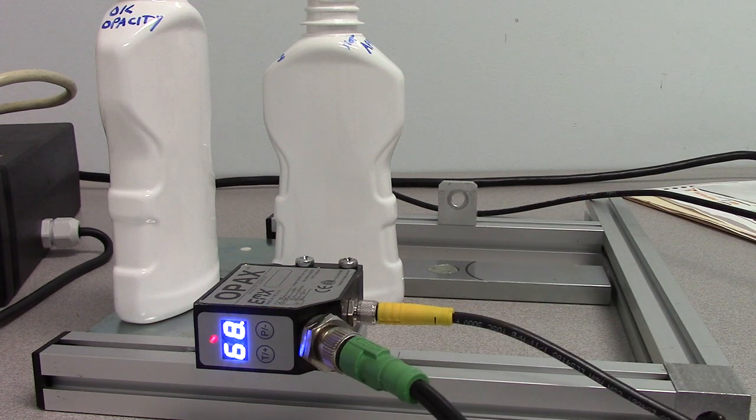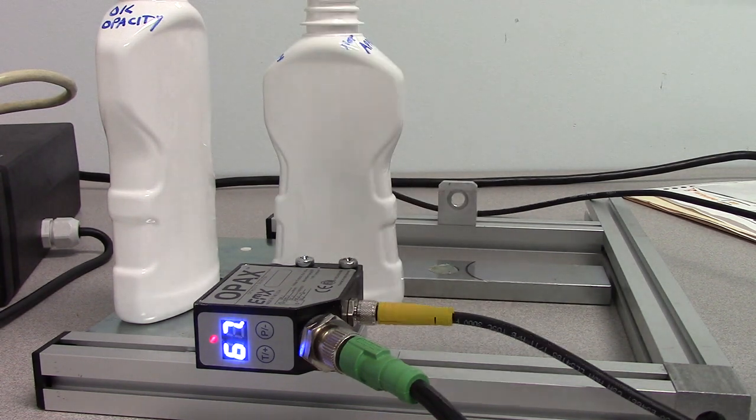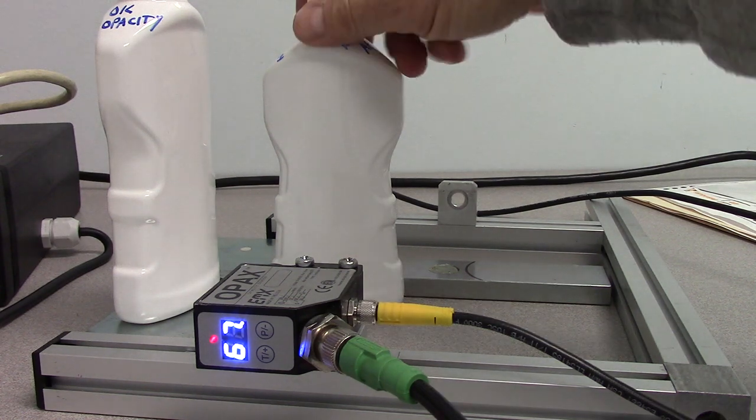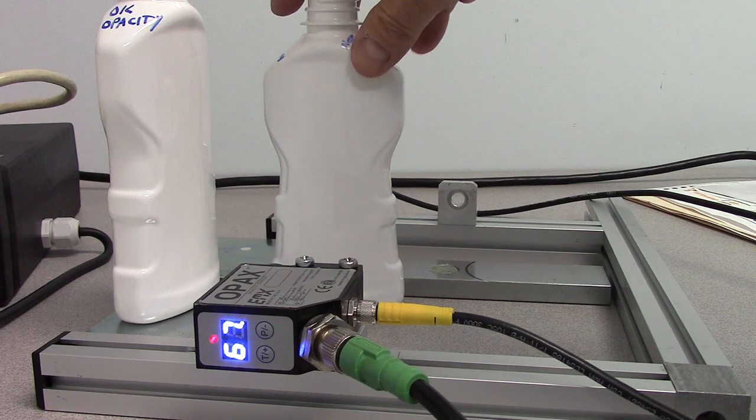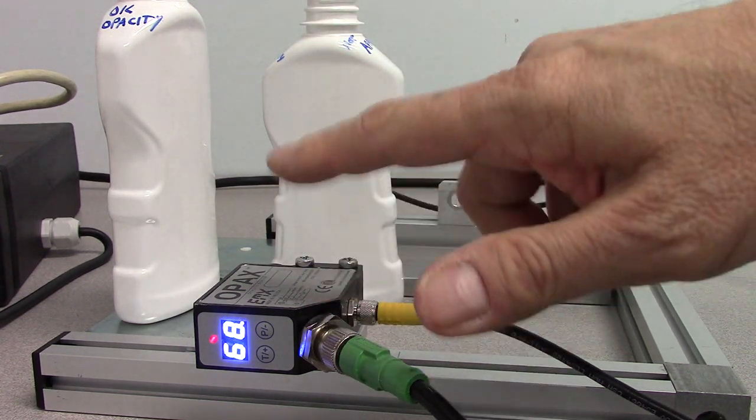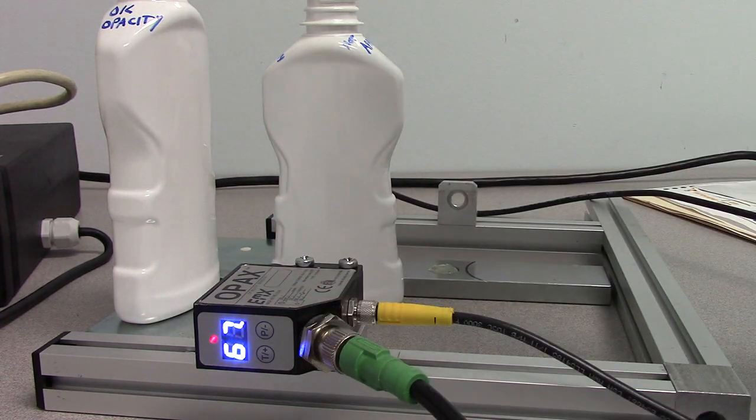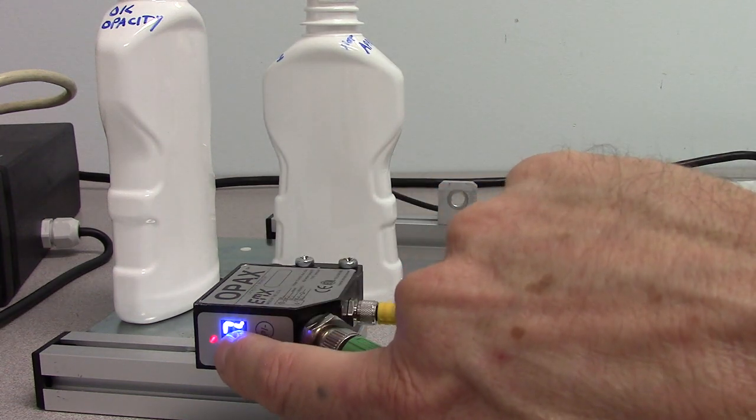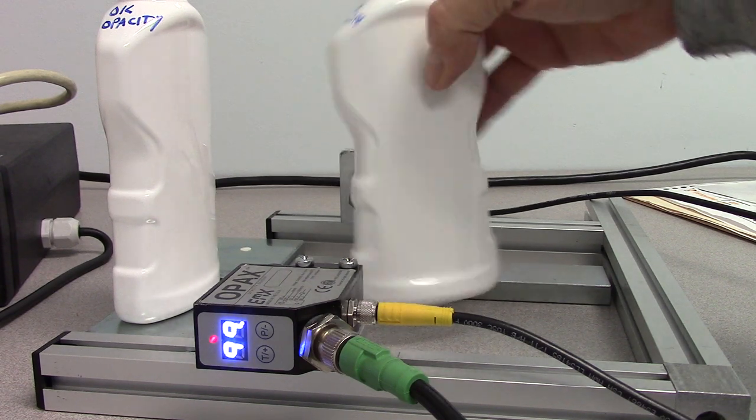In this type of application, since we have discrete containers, we would usually recommend some type of position sensor to indicate to your data system or PLC that the container is properly positioned between the sensor's transmitter and receiver. At this point we would read the sensor, see the discrete output is activated, and reject this poor opacity container.